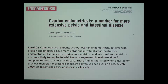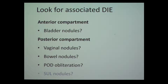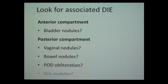Just diagnosing the endometrioma is not enough — you need to look for associated deep infiltrating endometriosis: bladder nodules, vaginal nodules, bowel nodules, pouch of Douglas obliteration, and uterosacral ligament nodules. The uterosacral ligament nodules are incredibly difficult; I couldn't see them for two years, but now I see them everywhere.